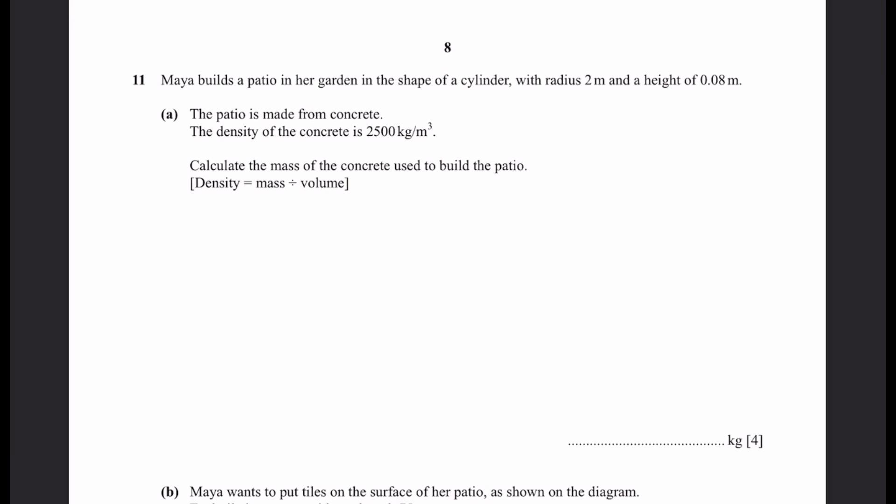Question 11: Maya builds a patio in her garden in the shape of a cylinder with radius 2 meters and height 0.08 meters. Part A: The patio is made of concrete. The density is 2500 kg per meter cubed. Calculate the mass of the concrete used to build the patio. Density equals mass divided by volume, so that means mass equals density times volume.